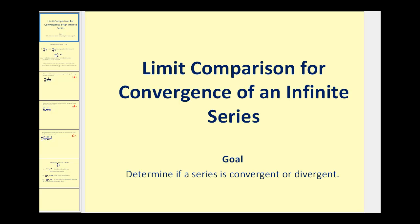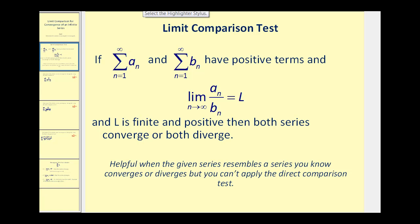Welcome to a video on the limit comparison test for the convergence of an infinite series. We need to be careful not to confuse this with the comparison or direct comparison test. The limit comparison test states that we have two infinite series that both have positive terms, and the limit of the quotient of a_n and b_n equals L, where L is finite and positive, then both series converge or diverge.